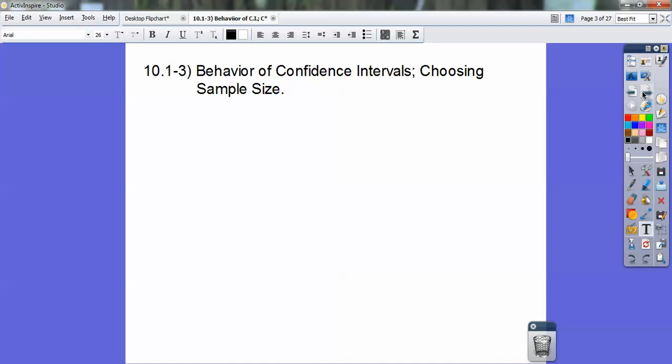Here's Section 10.1-3, Behavior on Confidence Intervals and Choosing a Sample Size. So the margin of error, we're going to abbreviate it as MOE, is your Z star, your Z score, times the population standard deviation divided by the square root of n.